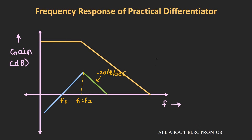When F1 ≠ F2, the input signal frequency should be between F0 and the minimum of F1 and F2. For accurate differentiation, the input signal frequency Fs should be at least 10 times less than the upper cutoff frequency.